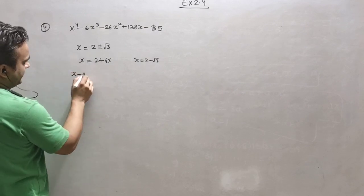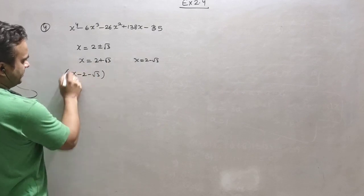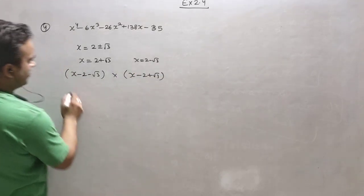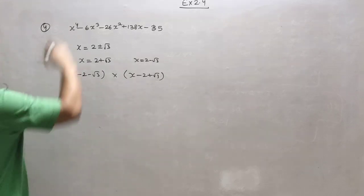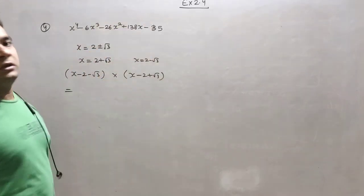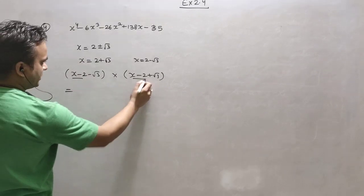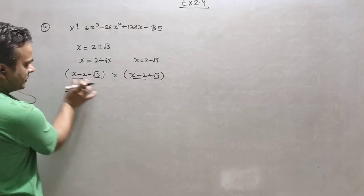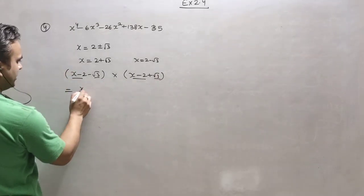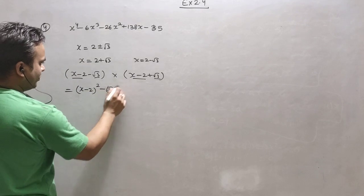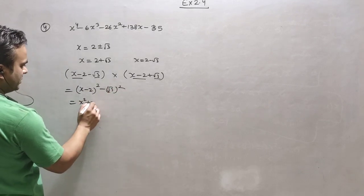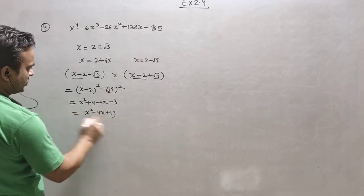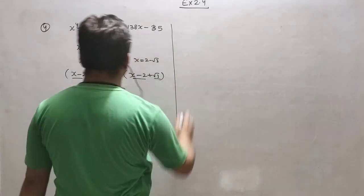We shift this particular number here, and the product of both factors will divide this polynomial; we will get the quotient in quadratic form. Rather than multiplying directly, we can use the identity: x minus 2 as 'a' and root 3 as 'b', so a squared minus b squared gives x squared minus 4x plus 1. Now this x squared minus 4x plus 1 will divide the polynomial.